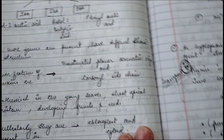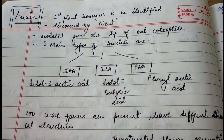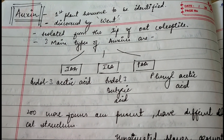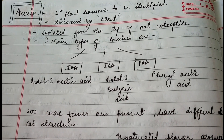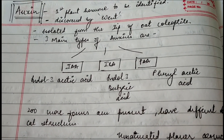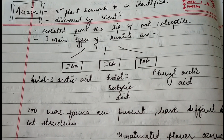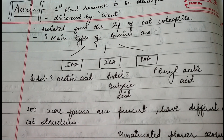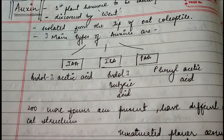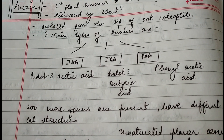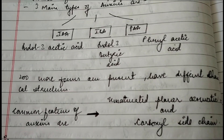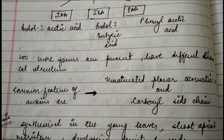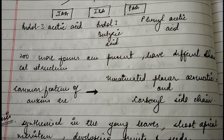Now we'll start with auxin. Auxin is the first plant hormone to be identified. It was discovered by Went and was isolated from the root tip of the oat coleoptile. There are three main types of auxins: IAA (indole-3-acetic acid), IBA, and PAA (phenyl acetic acid). There are more than 200 forms present, all with different chemical structures.